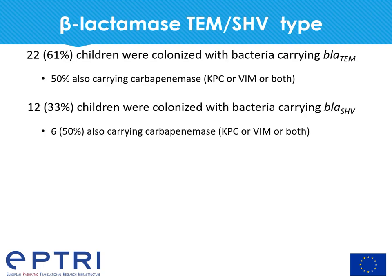22 children were colonized with bacteria carrying TEM beta-lactamase, and half of them also had a carbapenemase such as KPC, VIM, or both. 12 children were colonized with bacteria carrying SHV beta-lactamase, and again half of them also had KPC, VIM, or both.